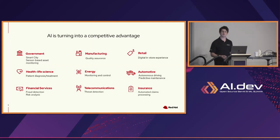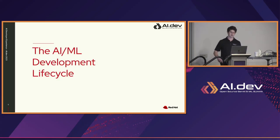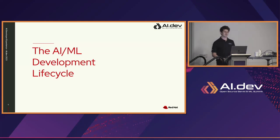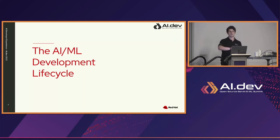These advantages are really immense, but it's essential to ensure that the models we're working with are running efficiently, reliably, and most importantly, securely. This brings me to the AI and ML development lifecycle. From talking to customers at Red Hat, a lot of feedback we've gotten is that their AI and ML models are not making it to production — because there's a lot of complexity in building, deploying, and monitoring these models.